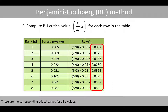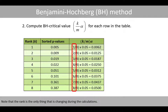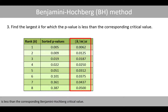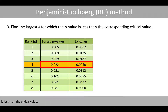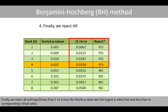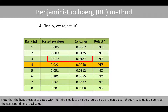These are the corresponding critical values for all p-values. Note that the rank is the only thing that is changing during these calculations. Next, we find the largest k for which the p-value is less than the corresponding Benjamini-Hochberg critical value. We see that the p-value with rank 4 is less than the critical value, whereas the subsequent p-values are all greater than their corresponding critical values. Finally, we reject all null hypotheses from 1 to 4, since the fourth p-value was the largest p-value less than its critical value. Note that the hypothesis associated with the third smallest p-value should also be rejected, even though its value is bigger than the corresponding critical value.